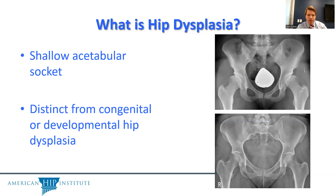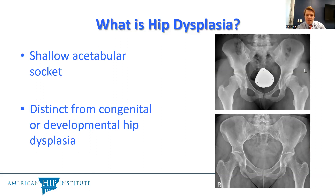Hip dysplasia is oftentimes a radiographic diagnosis, defined as a shallow acetabular socket. The above x-ray shows a patient that has hip dysplasia. You can compare it to the x-ray below, showing a patient with normal acetabular coverage. It should be clear that the patient on top has decreased bony coverage of the femoral head compared to the patient below.